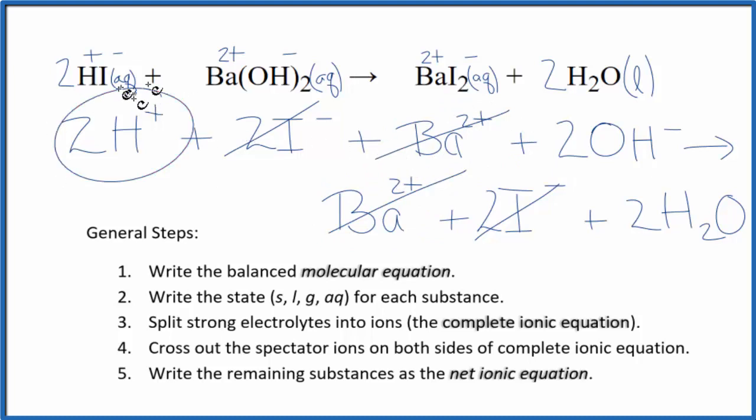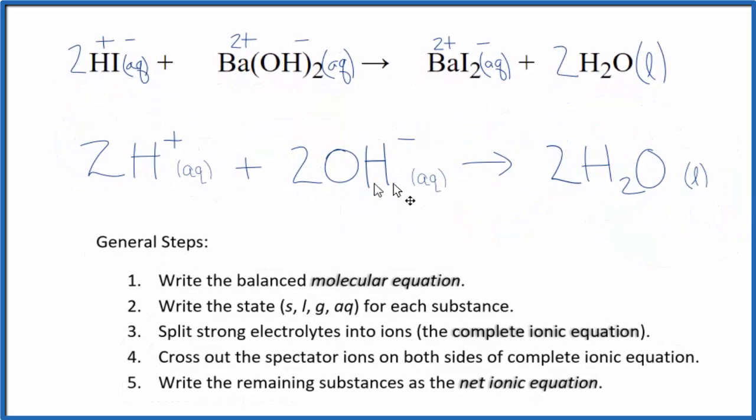And what remains is the net ionic equation for HI plus Ba(OH)2. I'll clean this up and write the states in and we'll have our net ionic equation. So this is our balanced net ionic equation for hydroiodic acid plus barium hydroxide.